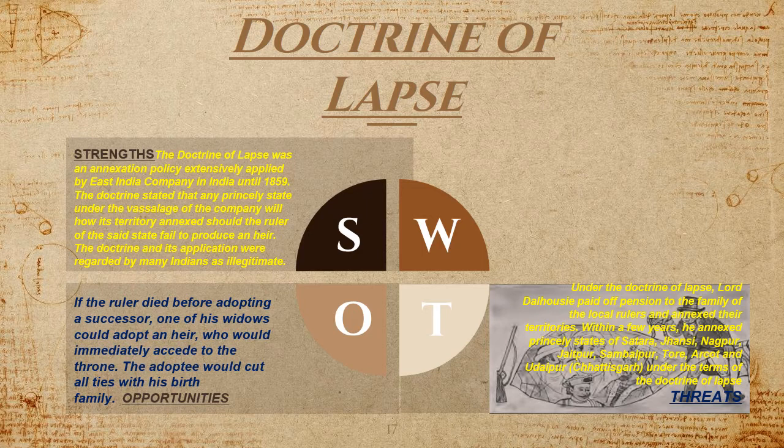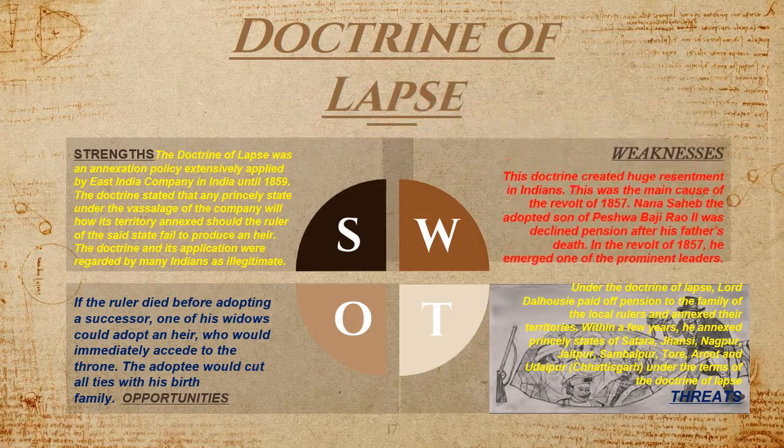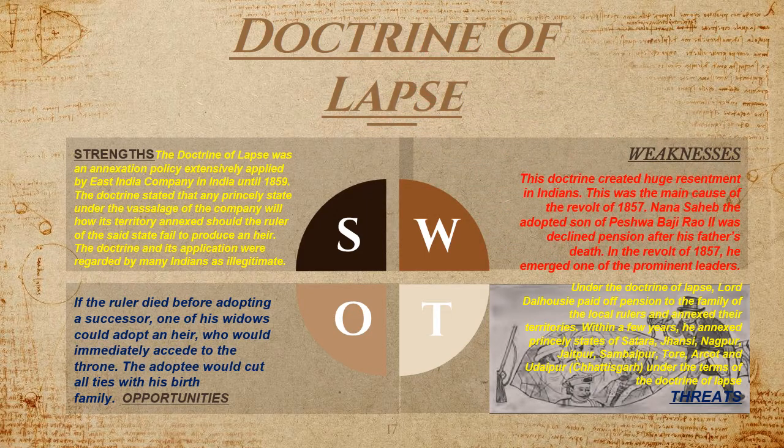The families of the former rulers were pensioned off and their territories annexed. The annexation of these states caused widespread resentment among the Indian rulers and became a potent factor responsible for the outbreak of the revolt of 1857. Nana Sahib, the adopted son of Peshwa Baji Rao II, inherited his father's personal property but was not given the pension that had been paid to his father. Nana Sahib became one of the important leaders of the revolt of 1857.